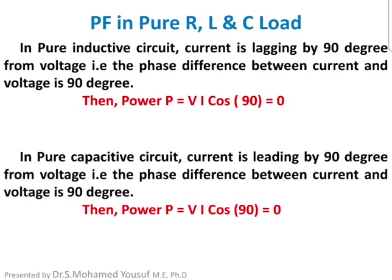The same applies to a pure capacitive load — the current leads the voltage by 90°, so the phase difference is 90°, cos(90°) = 0, and no power flows to the load. In summary: in a pure resistive load, total input power is transferred to the load, but in pure capacitive and inductive loads, no power is transferred.